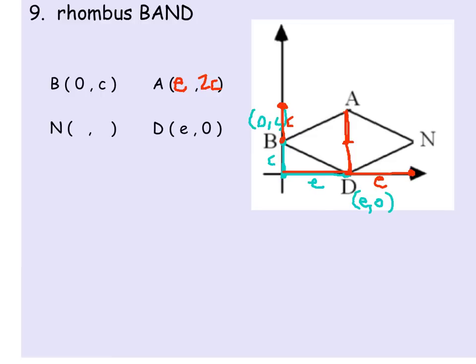For point N, you're not stopping at D. You're going past D. So that's going to be e plus e, which is 2e. And then you're going up to the same location as B was. And so you're going up c units. So that ordered pair would be (2e,c).